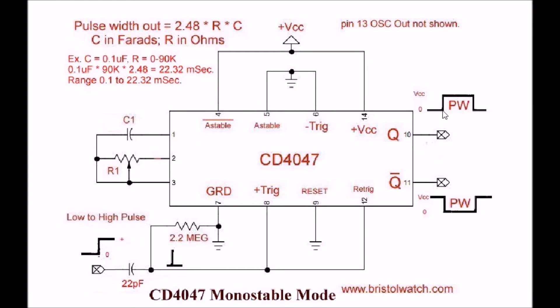The pulse width of the output pulse is dependent on the value of R1 and C1. The formula, and it's on the website, is 2.48 times R in ohms times C in farads. Just for argument's sake, a 0.1 microfarad and a 90k resistor will give you a range of something like 0.1 to 22.32 milliseconds. So you can change these values depending on the frequency of your input pulse and so forth.